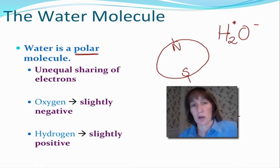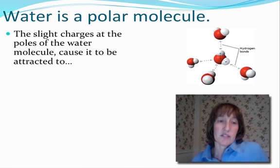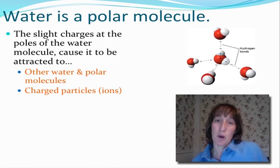There's an unequal sharing of electrons and that's what causes it to be polar. Seeing that it's a polar molecule, this is the reason that it causes it to be attracted to other things. What other things? Things such as other water molecules, other polar molecules, and other charged particles, and we call those ions.